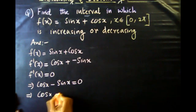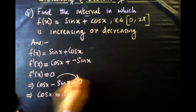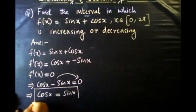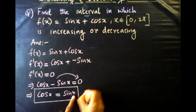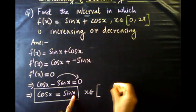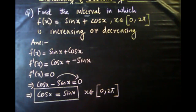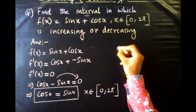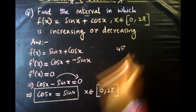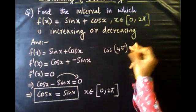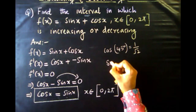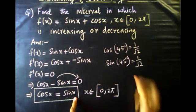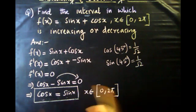Setting f'(x) = 0 gives cos x minus sin x = 0, which implies cos x = sin x. For x in the closed interval 0 to pi, if cos x equals sin x, both functions are equal at 45 degrees. Cos 45 degrees equals 1 by root 2, so x equals 45 degrees, which is pi by 4.